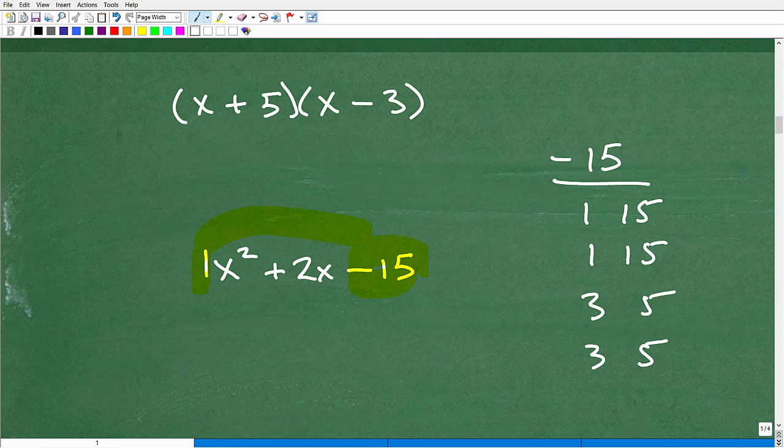get these factors negative three times five or three times negative five, which one adds up to two, a positive two, this one. Okay. Negative three plus five is a positive two. That's what I need. So this is going to be, remember, it's going to be two binomials and x and the x, this would be a minus three and this would be a plus five. Okay.